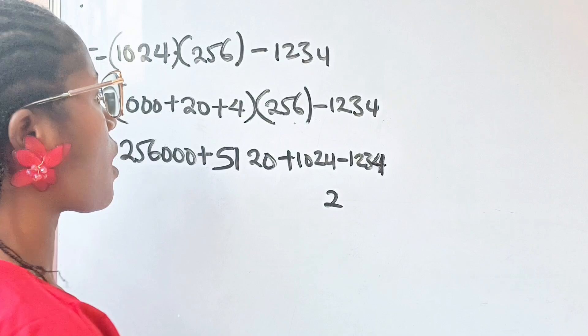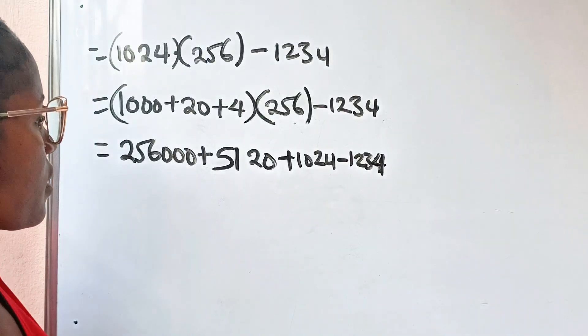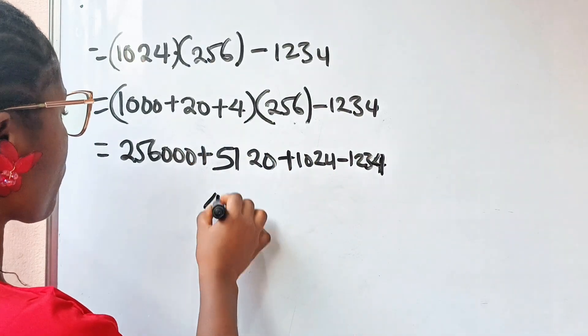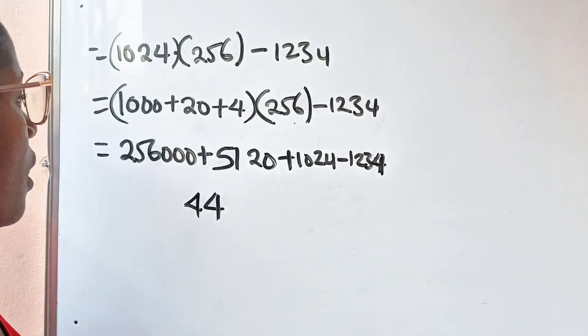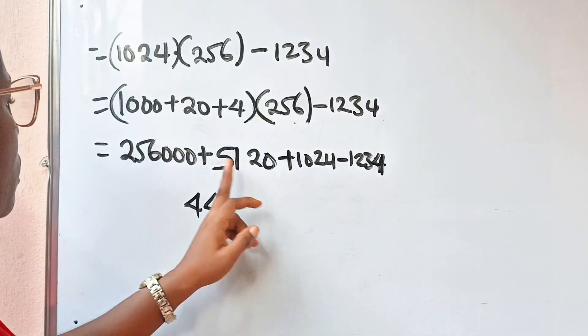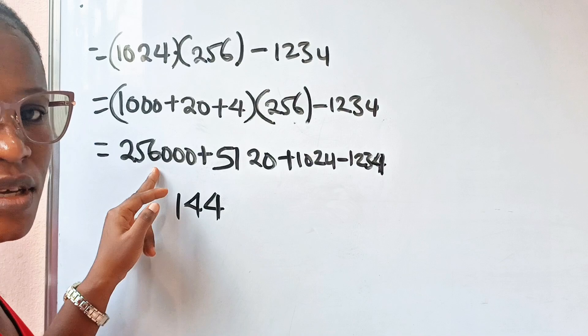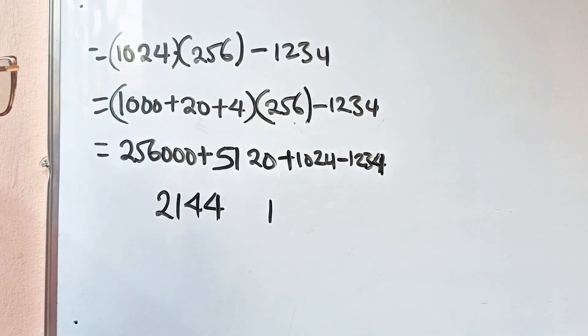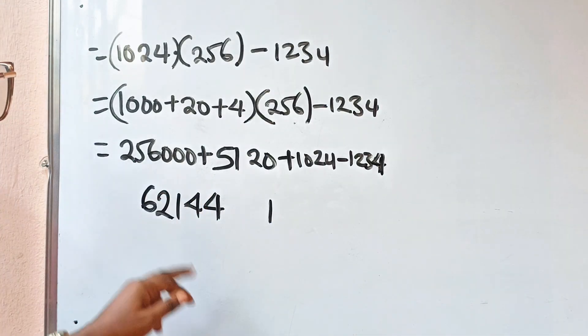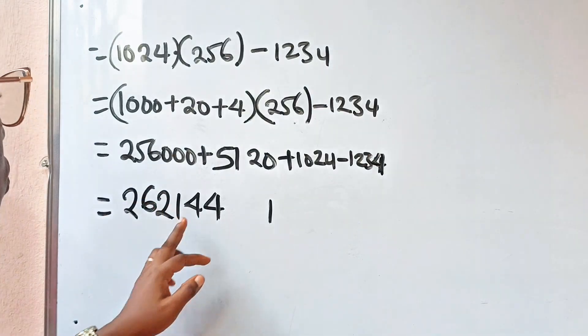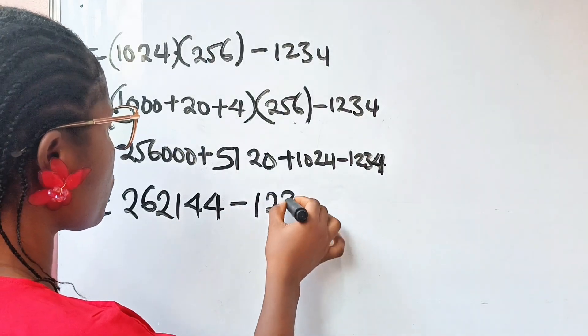Let us add these 3 first. So, 4 plus 0, plus 0 is 4. Coming to the second number from the back, 2 plus 2, plus 0 is 4 again. The third one, 0, plus 1, plus 0 is 1. The fourth line, 1 plus 5, which is 6, 6 plus 6 is 12. So, we write 2 and carry 1. Now, the fifth line is just 5. 5 plus 1 is 6. And, the seventh one is 2. So, we have 262144. That is 262144 minus 1234.